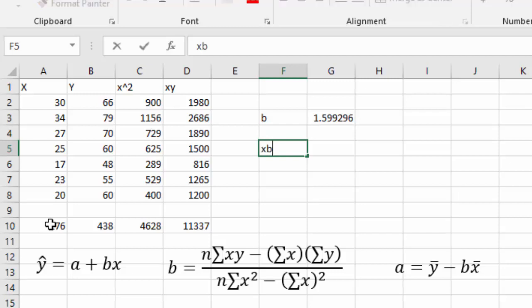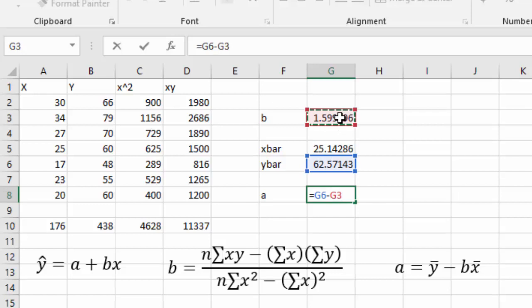To find my a first we need to find x bar and y bar. X bar is the average of the x's so we'll take the sum of the x's and divide by the sample size of 7. And for y bar we'll say equals the sum of the y's divided by 7 and we get the average of the y's. Now to get our a value it's going to be equal to y bar minus the b we found, click that cell, times the x bar. Click that cell and that'll give us our a of 22.36.